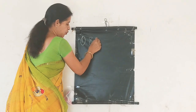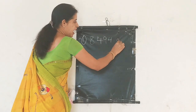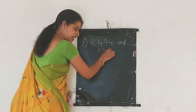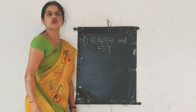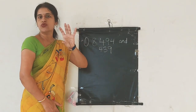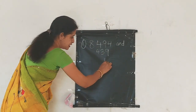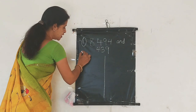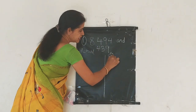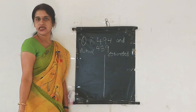The question is: you have to estimate 8,494 and the next number is 439. These are the two numbers that you have to estimate. Estimate means you have to round off. So let's round off them to the nearest 10. We will divide them into the actual one and the estimated one — this is what we will do after estimation.